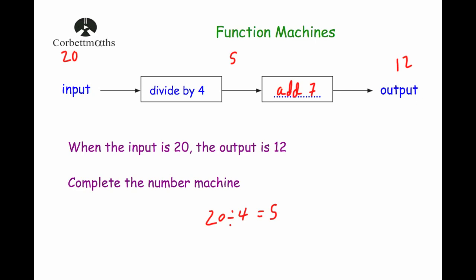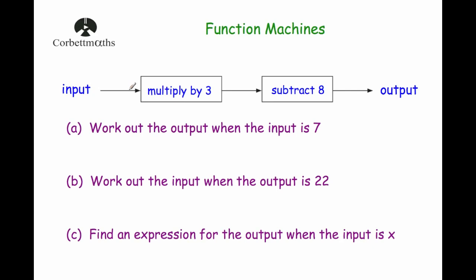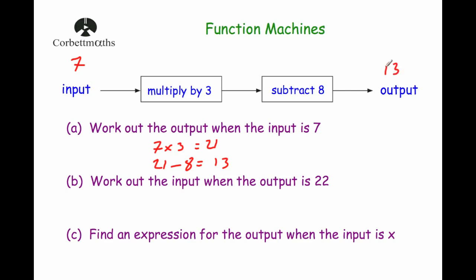Next example: the input goes through multiply by 3, then subtract 8, to get the output. Work out the output when the input is 7. We take 7 and multiply by 3: 7 times 3 is 21. Then subtract 8: 21 subtract 8 is 13. So if the input is 7, the output is 13.